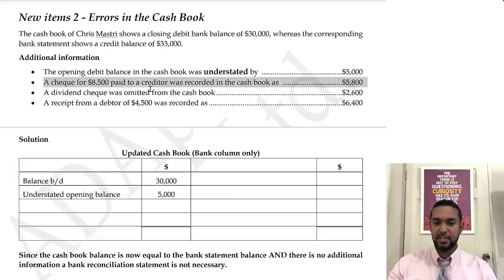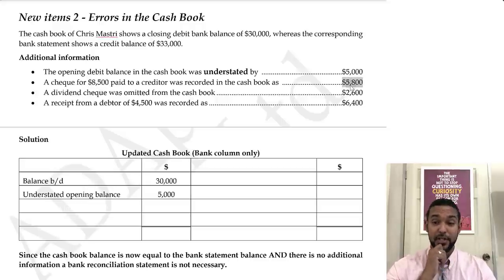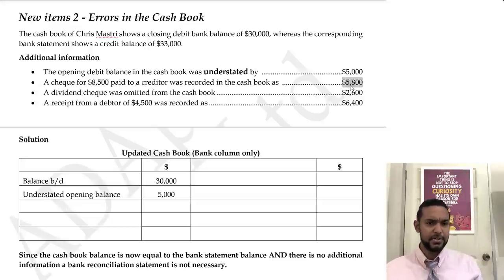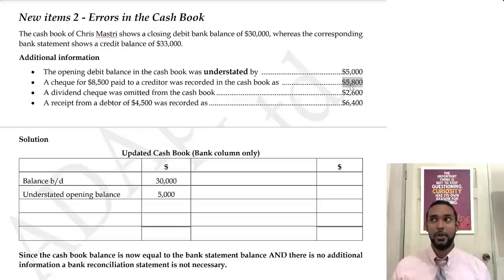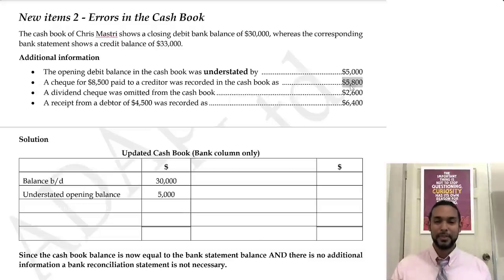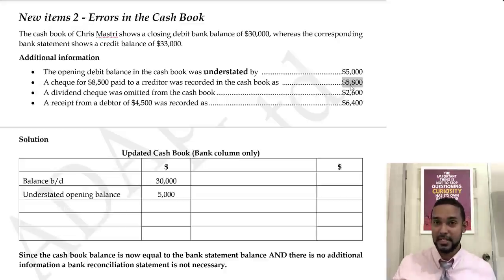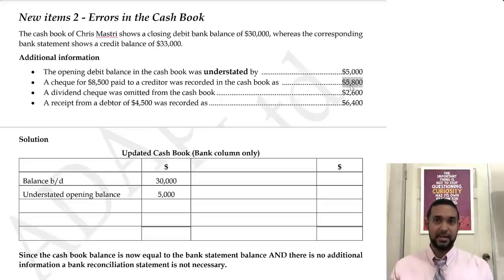A check for $8,500 paid to a creditor was recorded in the cash book as $5,800 — a difference of $2,700. This is also an understated item because $5,800 is lower than $8,500. If the amount put into the account was lower than it should have been, that's an understatement or undercast figure. When I do my video on errors, we'll explore those terms further.